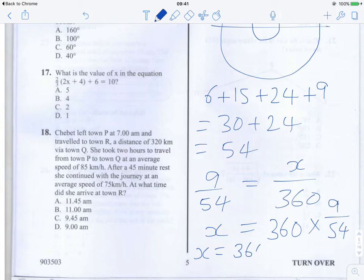So x is equal to 360 times by a sixth, which is the same as 360 divided by 6, which is equal to 60.